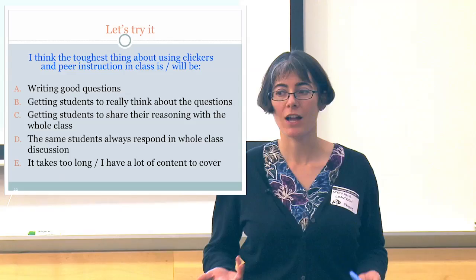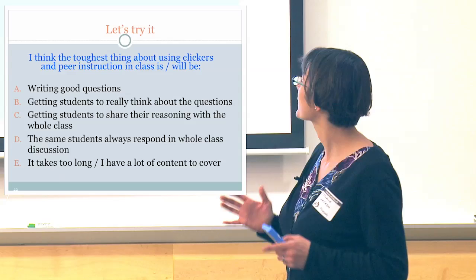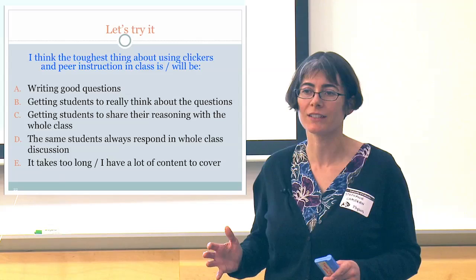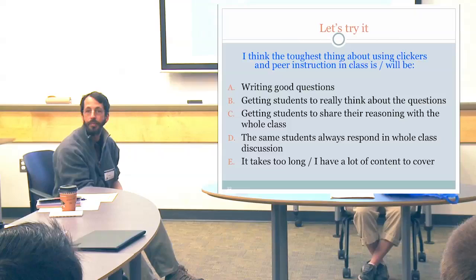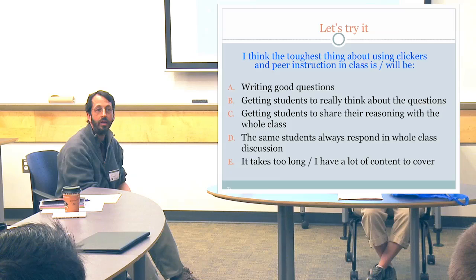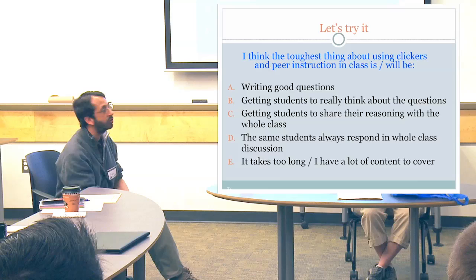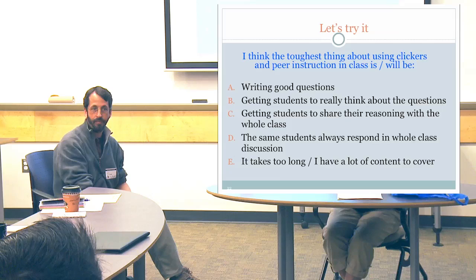I want us to try doing a peer instruction question together — but I want it to apply to you. Think on your own for a moment: what do you think the toughest thing about using clickers and peer instruction in class is, or will be? Just think on your own for a moment about your best answer. Most likely what you were thinking is not A through E, but I'm going to ask you to pick one of A through E — if not the closest to what you were thinking, then at least the one to which you most strongly connect.